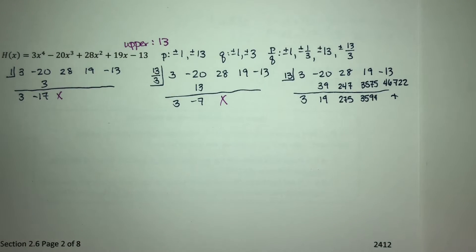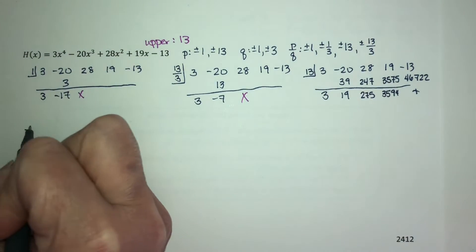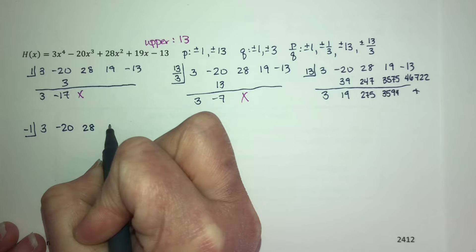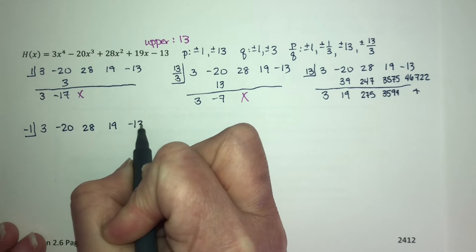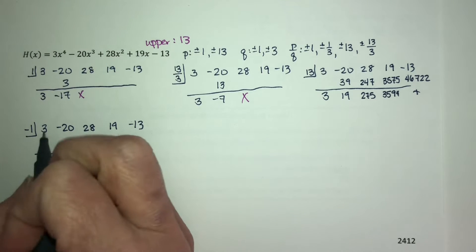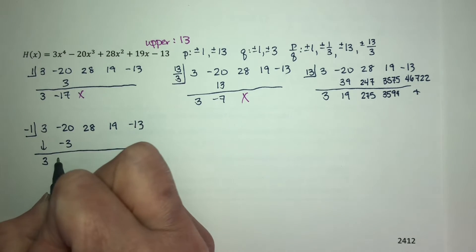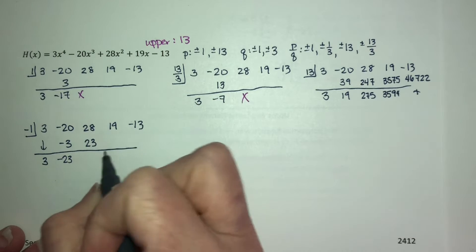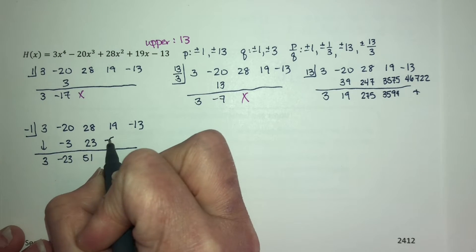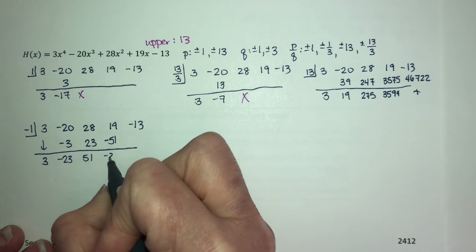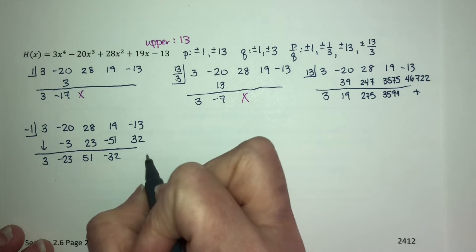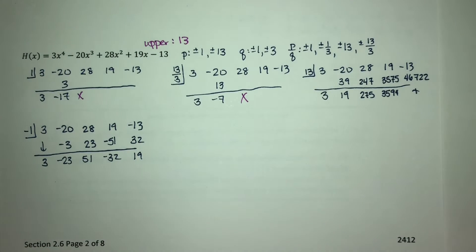Now let's check for a lower bound. I'm going to check negative 1. Bring down the 3, negative 3, negative 23, positive 23, and then 51, negative 51, negative 32. So far I do have alternating signs. Positive 32, which gives me 19. I do have alternating signs. So negative 1 is a lower bound, but it may not be the largest one.